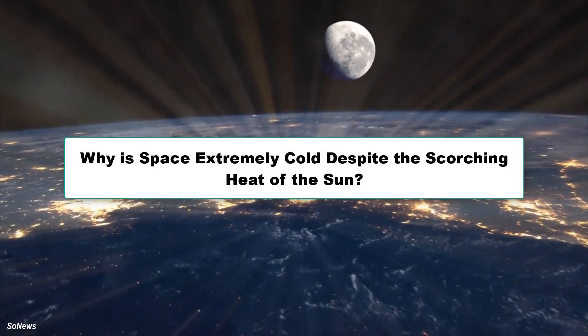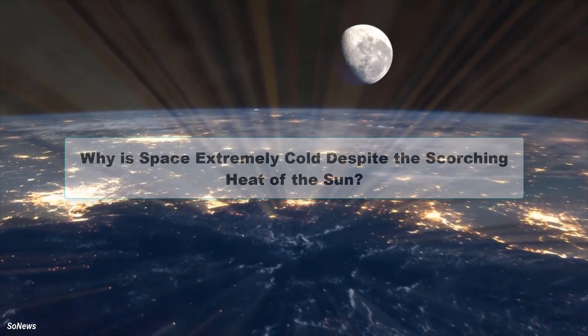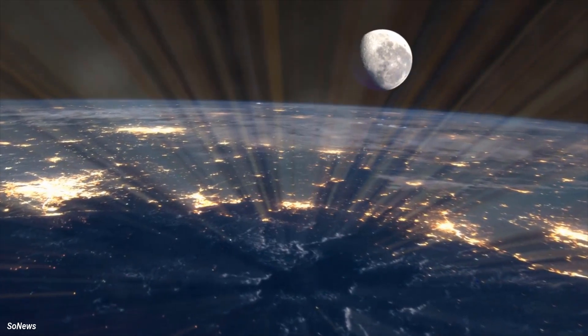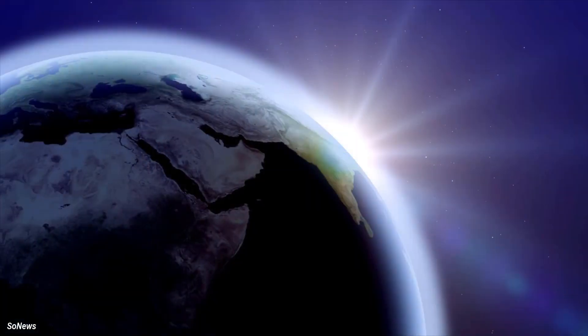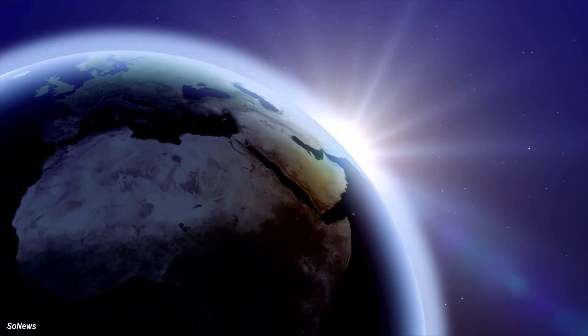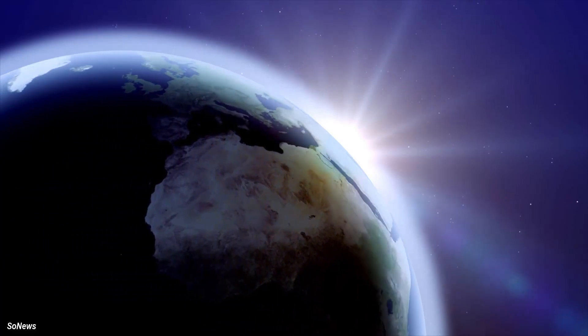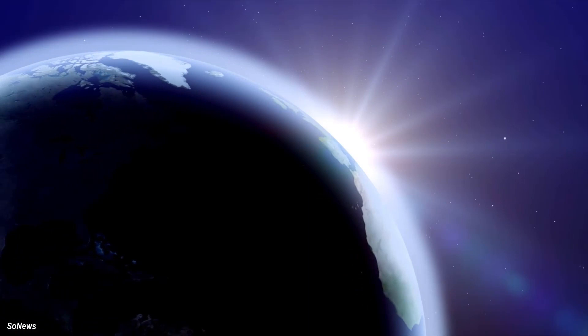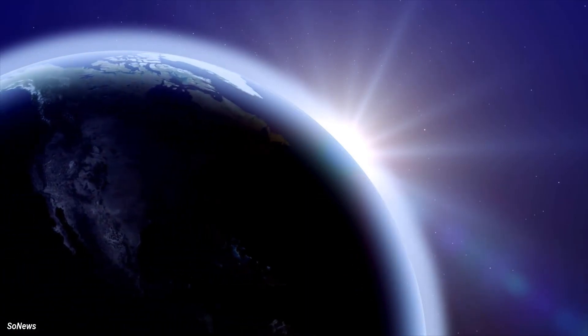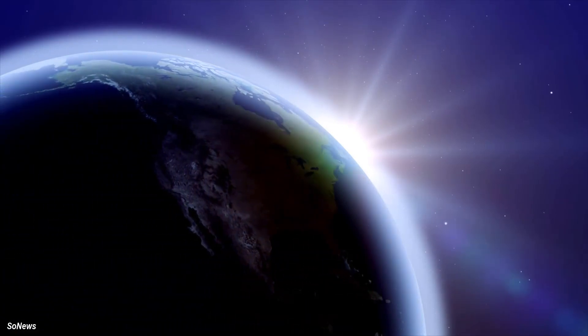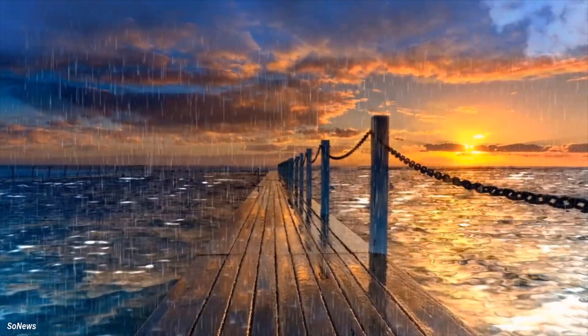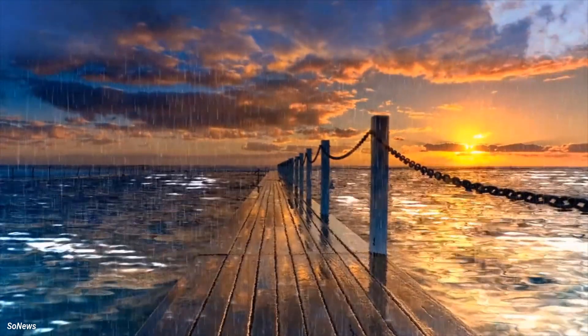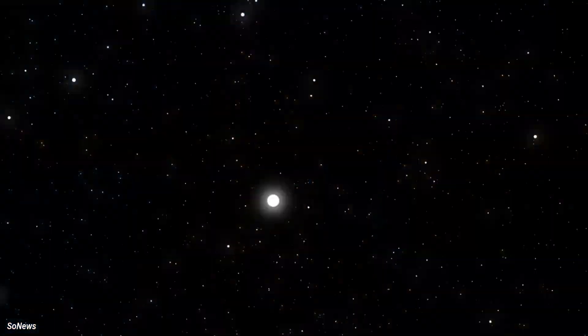Why is space extremely cold despite the scorching heat of the sun? We have all wondered why space is freezing cold despite the sun's scorching heat. The answer is actually quite simple and straightforward. We feel the heat that comes from the sun, which is 150 million kilometers away from us, every day. If the sun is so hot, why is space so cold? To learn the answer to this question, we need to know two terms: heat and temperature.